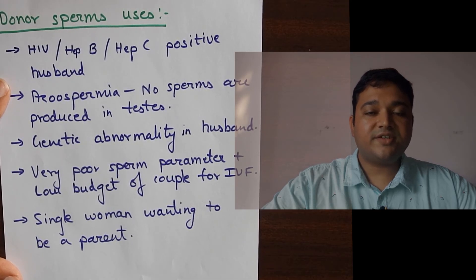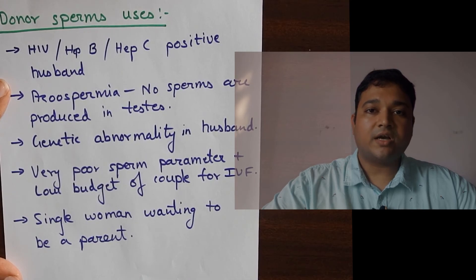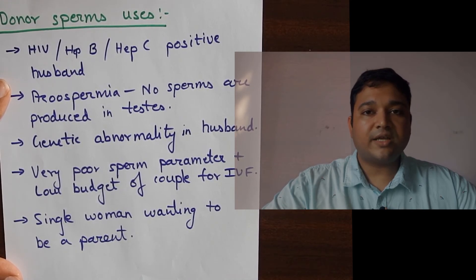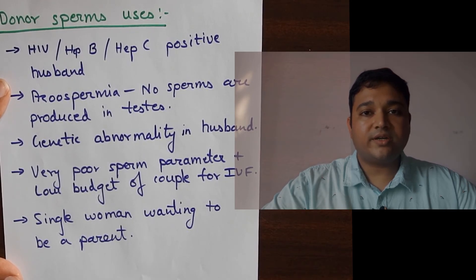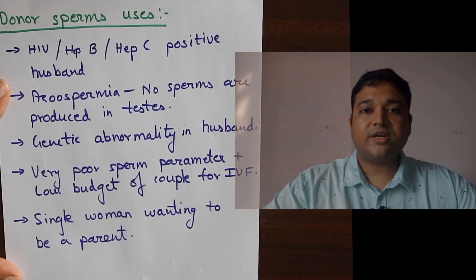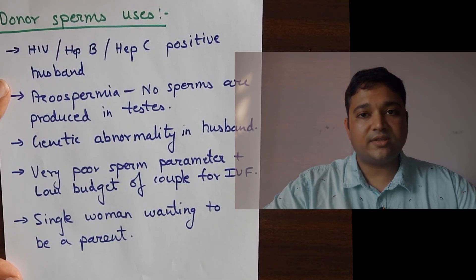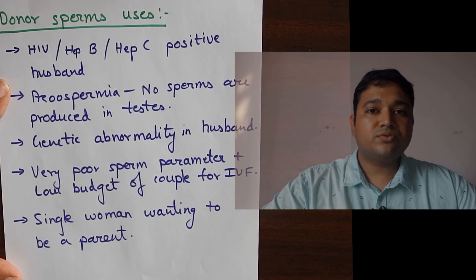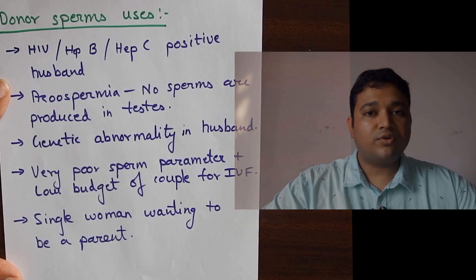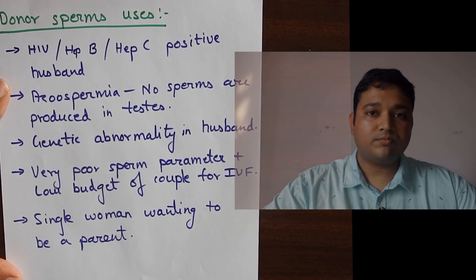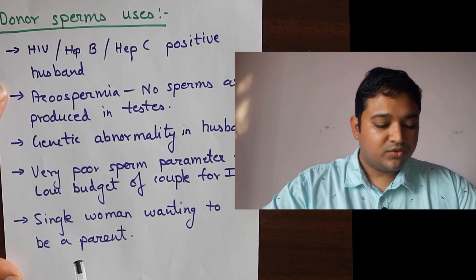IVF with ICSI is the treatment of choice for couples with low sperm count, but costs approximately 1.5 to 2 lakh Indian rupees. Since IVF success rates are 30 to 40% per cycle internationally, some couples may require 2 to 3 attempts. For couples who cannot afford IVF-ICSI cycles, donor IUI is an option. Donor sperms are also recommended for single women who want to become a parent.